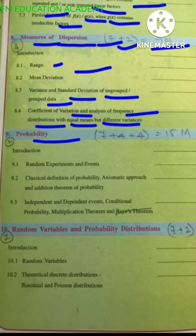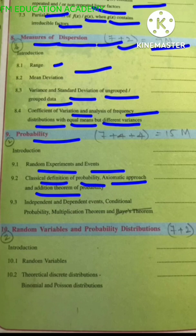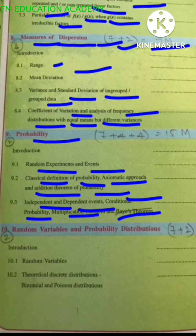9th chapter, probability, random experiments and events. Classical definition of probability, axiomatic approach and addition theorem of probability, independent and dependent events, conditional probability, multiplicative theorem and Bayes theorem.